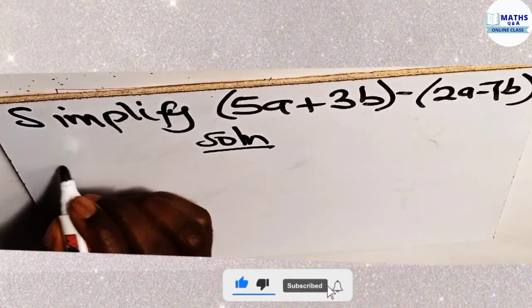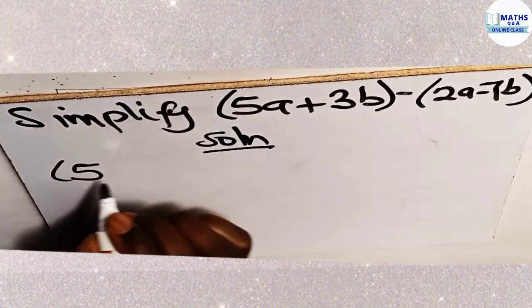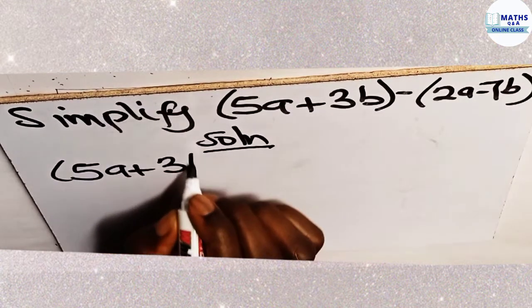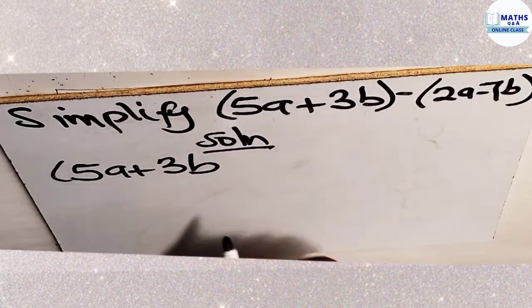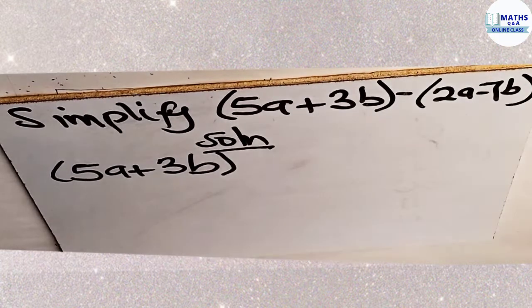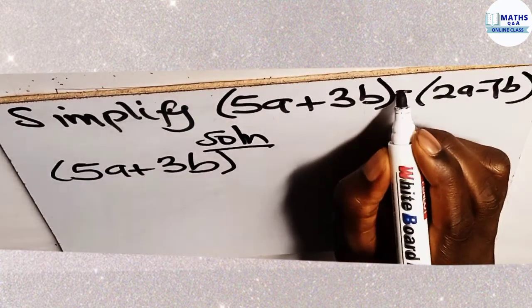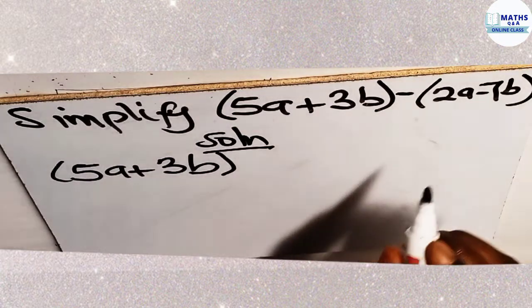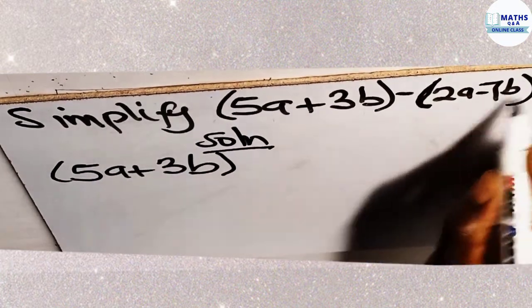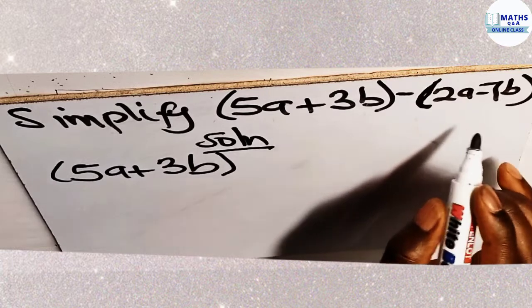So we have 5a plus 3b. Let's close our brackets. But you see that the negative sign here is affecting all the items in this bracket.